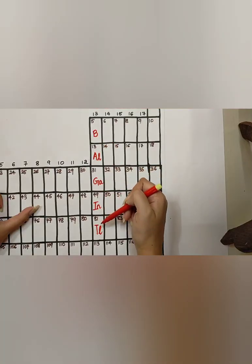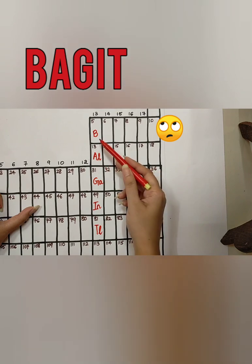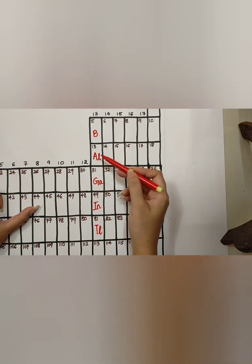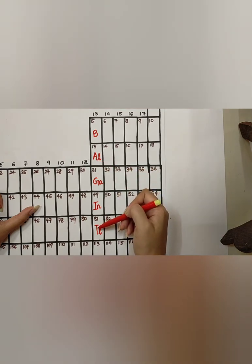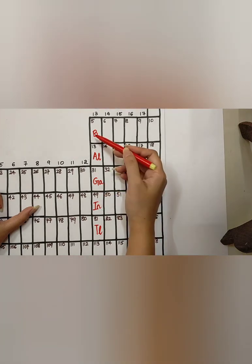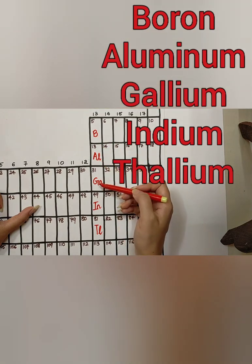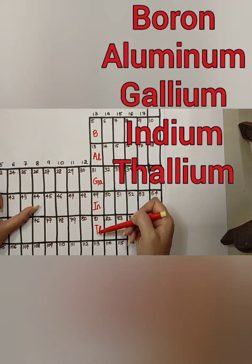For group 13 elements, you have to remember this word, Bagget. B, A, G, I, T. For A and for T, you will put L. Whereas for G, you will put A and I, you will put N. So the elements are, Boron, Aluminium, Gallium, Indium, Thallium.